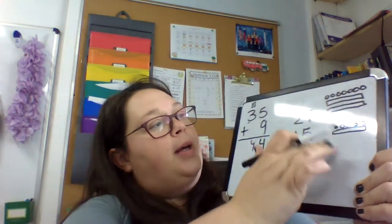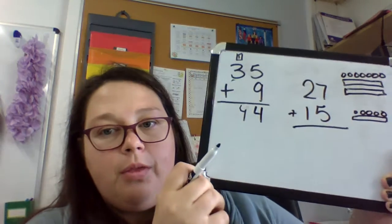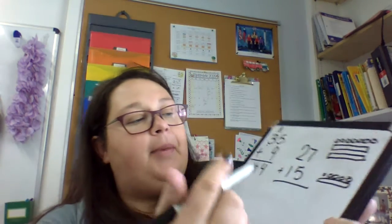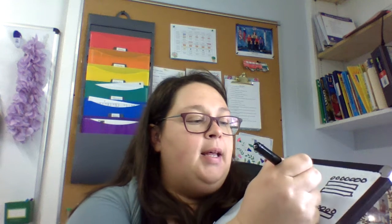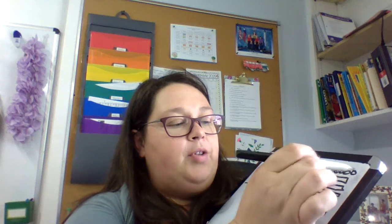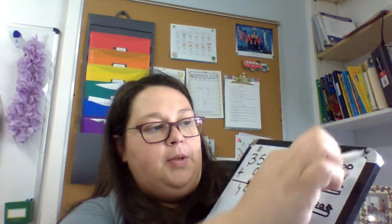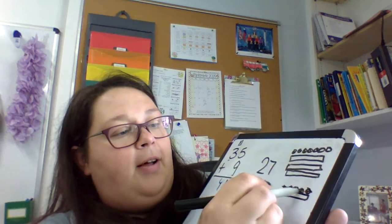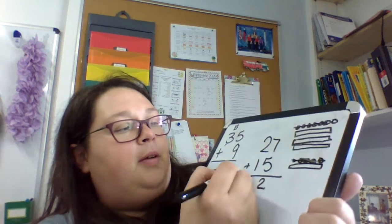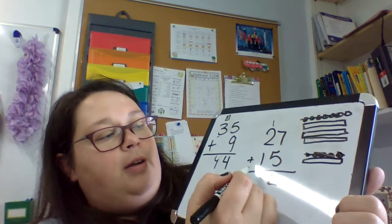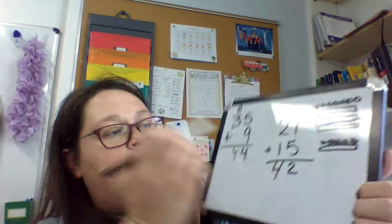So now I know for sure I have 3 tens. But I can combine some of these ones to make another bar: 1, 2, 3, 4, 5, 6, 7, 8, 9, 10 — that's 10. And what do I have left? 11, 12. So my 2 is my 2 little ones left. I'm going to carry that over here, and now I have 42.